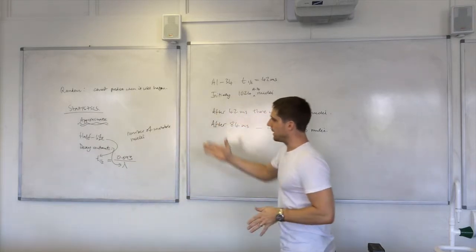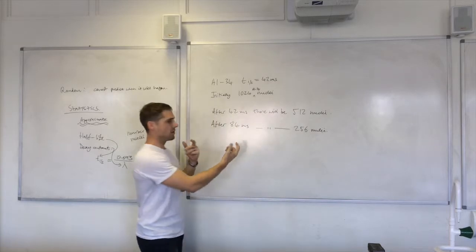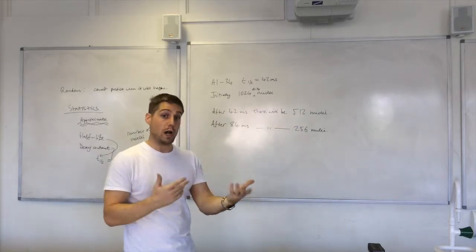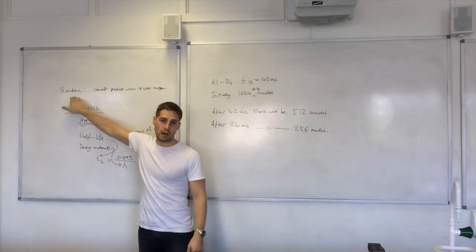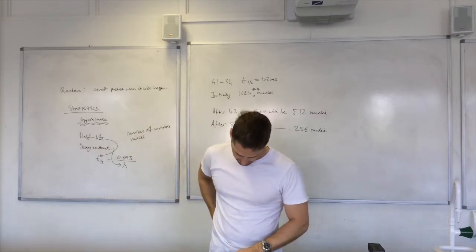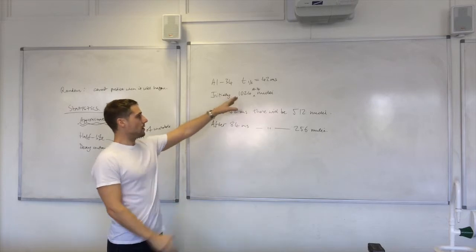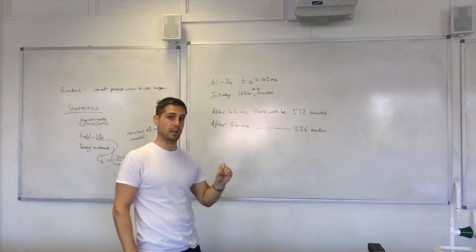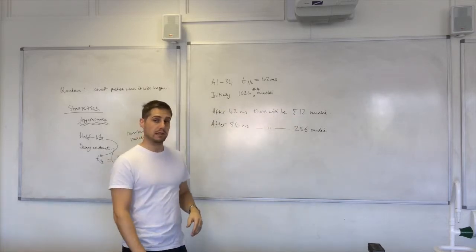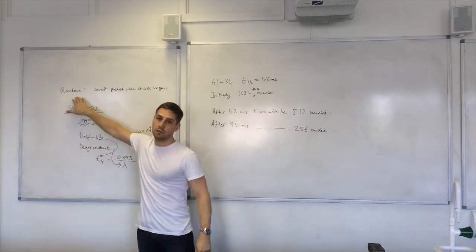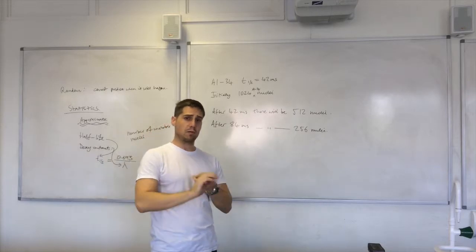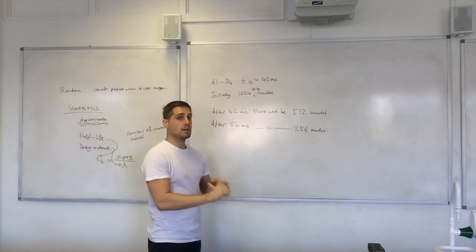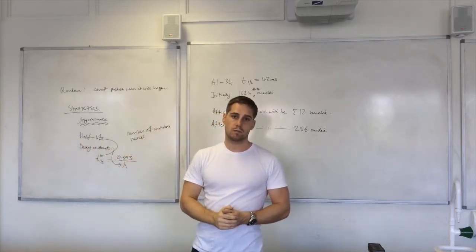What did we say about using statistics? It's approximate. So you have to do a little bit of discussion about whether you would expect to see exactly this many nuclei, and if not, why not. That's about relating the half-life to the random nature of radioactive decay. Additionally, if you're looking at your 1024 nuclei, could you tell me exactly which 512 nuclei will decay or will remain after 42 milliseconds? Use that as a prompt to discuss the random nature of radioactive decay — which nuclei will decay and exactly how many will decay, based on your knowledge of the half-life and the random nature of radioactive decay.